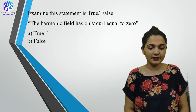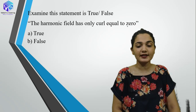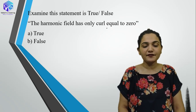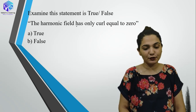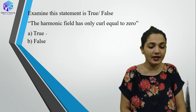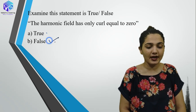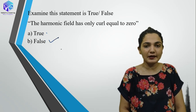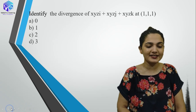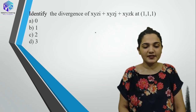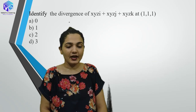The harmonic field has only curl equal to zero — this is false. A harmonic field is defined when the Laplacian is zero, not just curl alone. Whenever extreme words like 'only' or 'always' appear, those statements are typically incorrect.